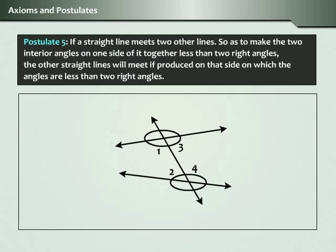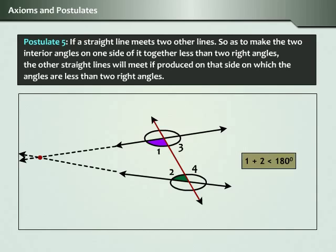Postulate 5: If a straight line meets two other lines so as to make the two interior angles on one side of it together less than two right angles, the other straight lines will meet if produced on that side on which the angles are less than two right angles.